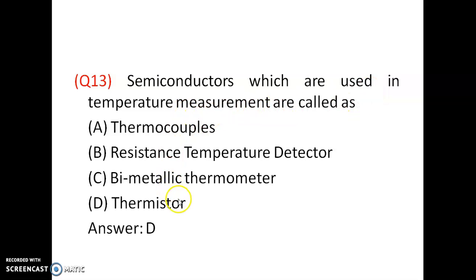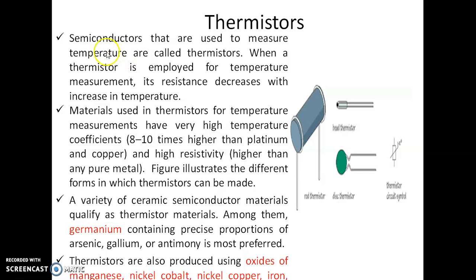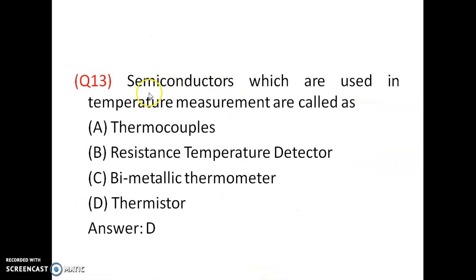Question 13: Semiconductors used in temperature measurements are called thermistors. In thermistors, resistance decreases with increase in temperature — opposite to RTD behavior — because thermistors have high temperature coefficients, 8 to 10 times higher than platinum or copper. Materials used include germanium and oxides of manganese, nickel, cobalt, copper, zinc, titanium, and tin. Option is D.